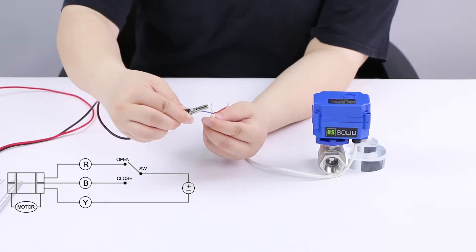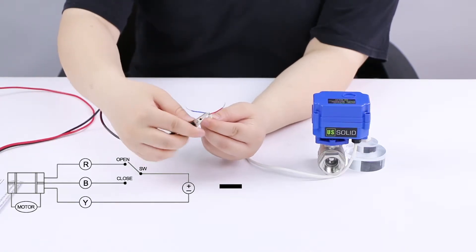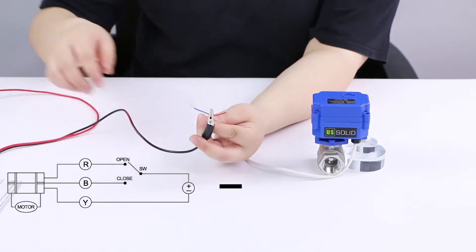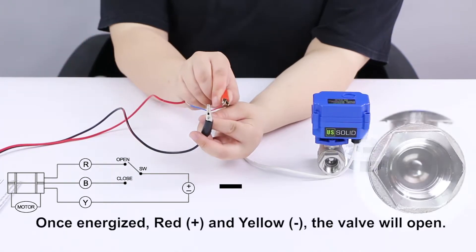Yellow wire should be connected to the negative pole of the power source. When red wire is connected to the positive pole, the valve will open.